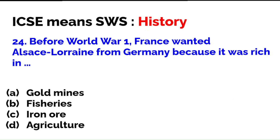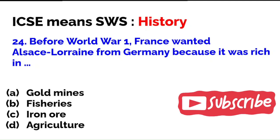Before World War One, France wanted Alsace-Lorraine from Germany because it was rich in — gold mines, fisheries, iron ore, or agriculture? The correct answer is iron ore.